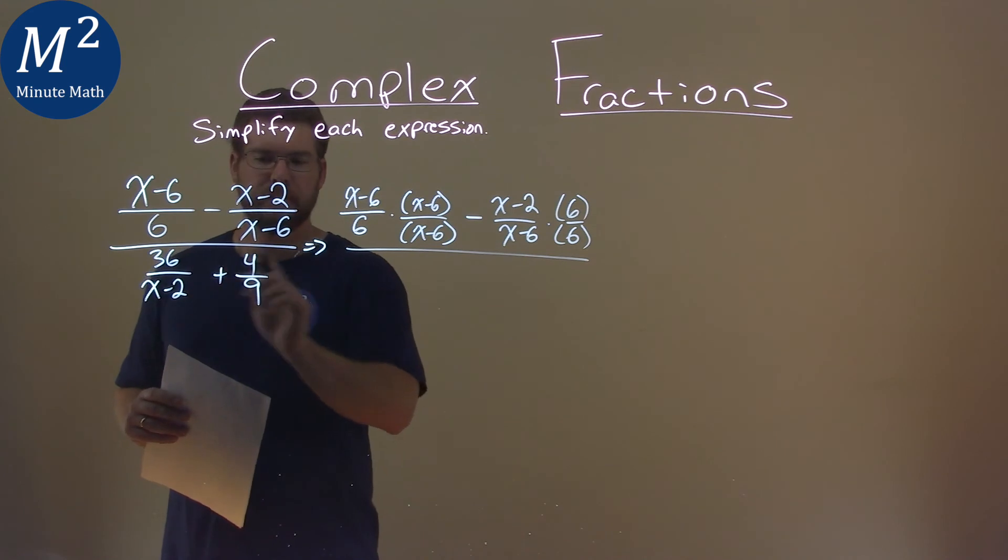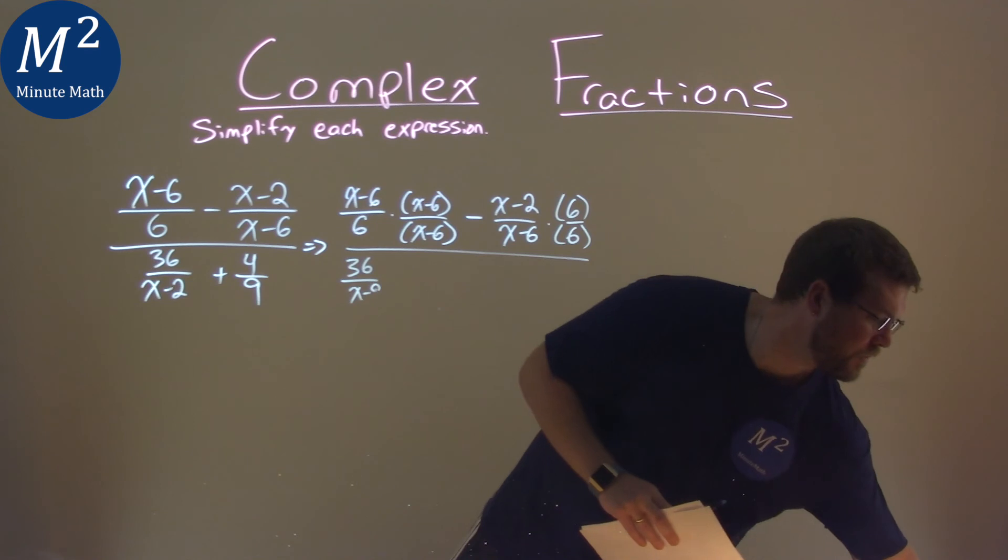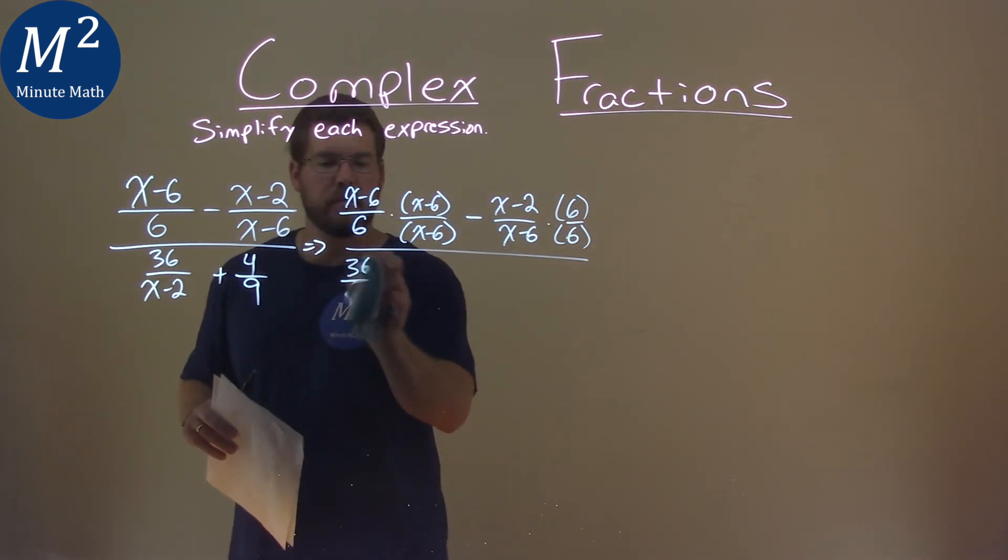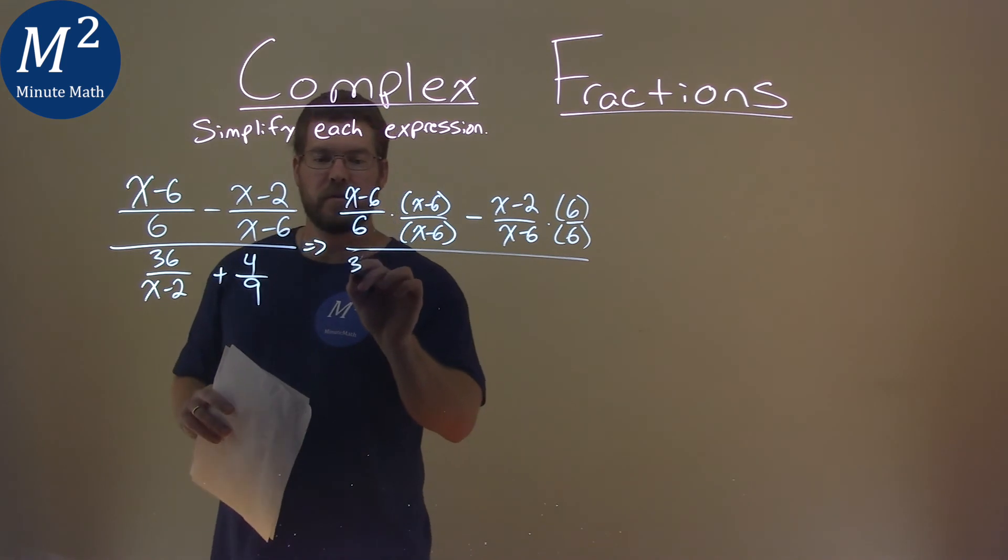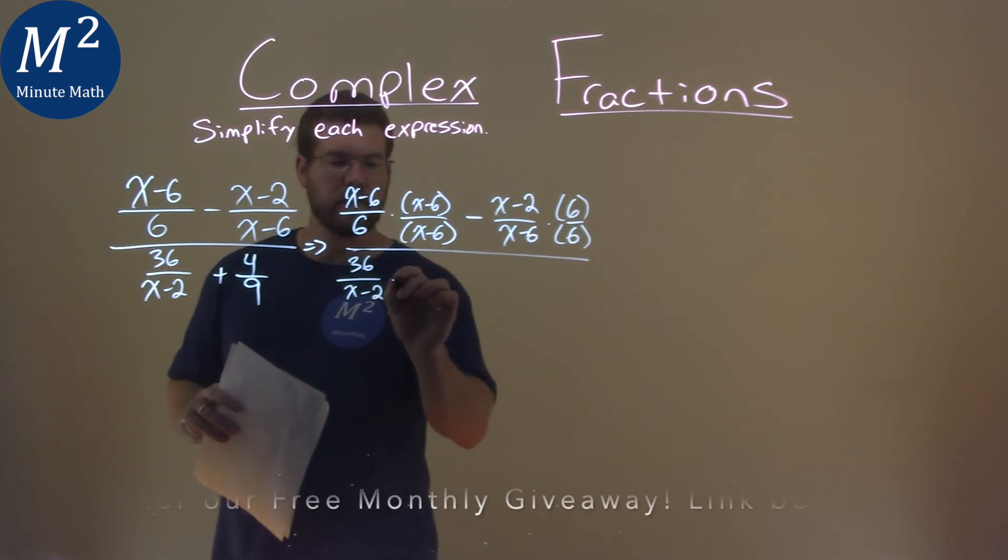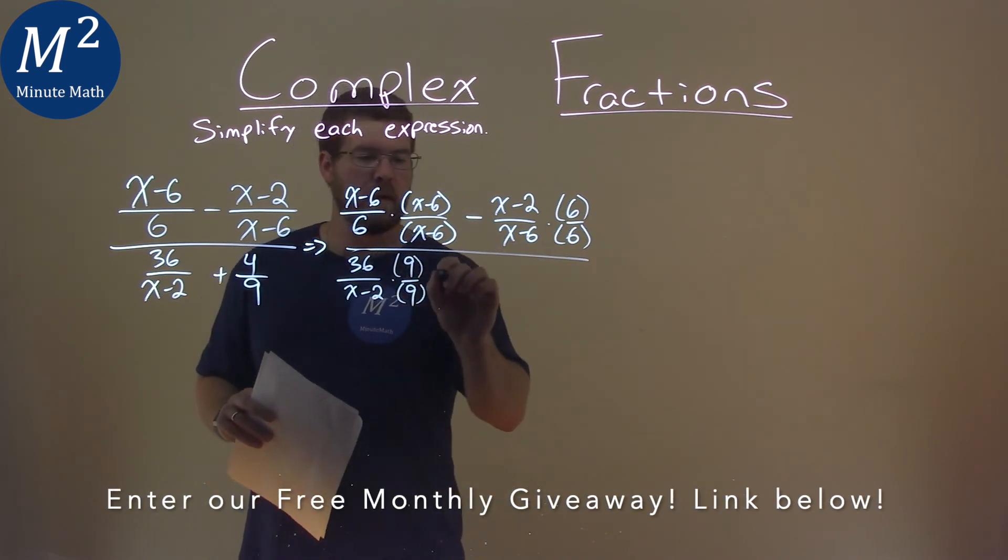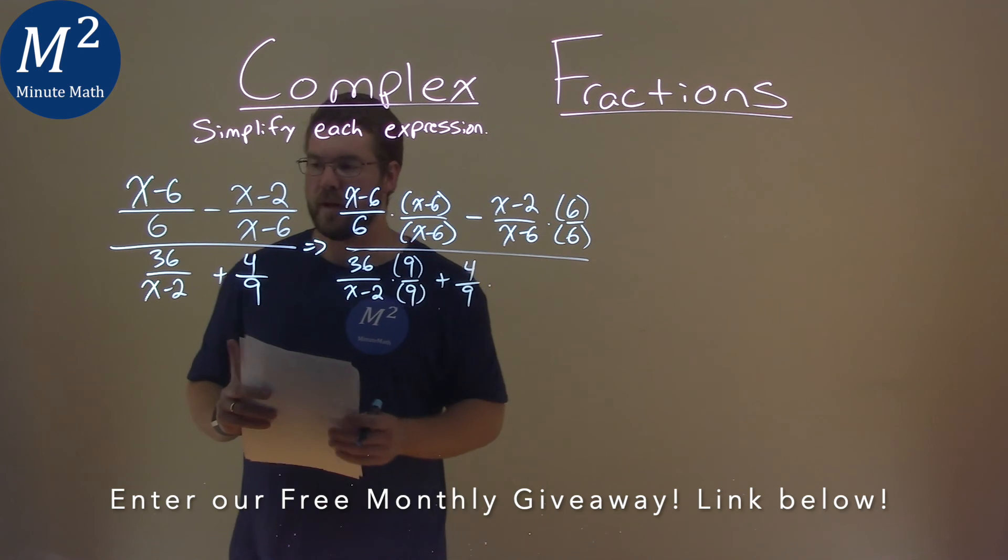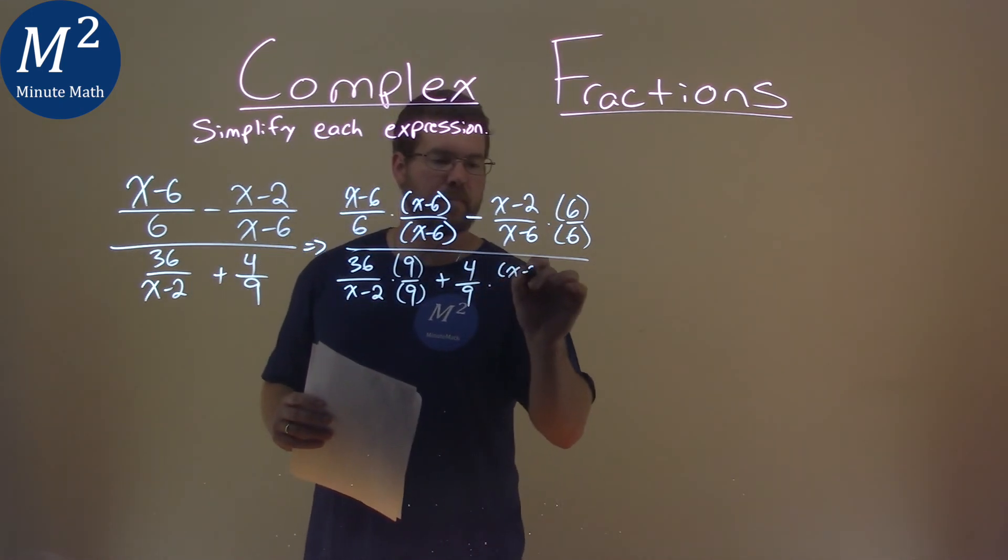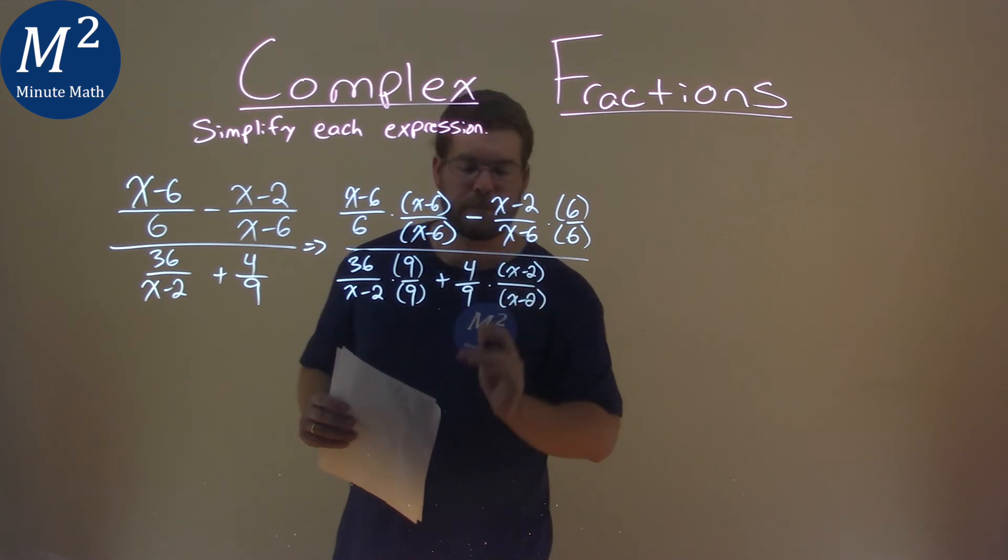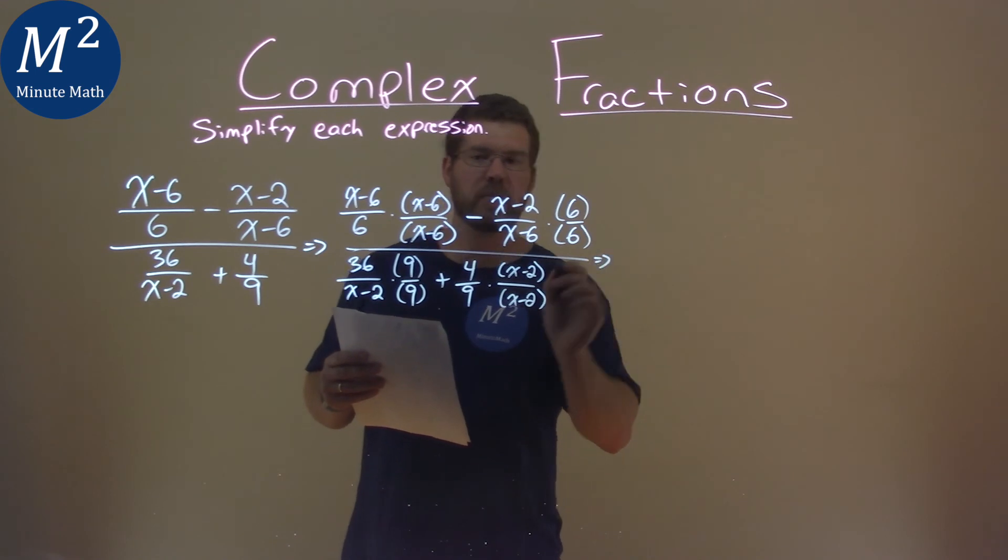Now, same idea down here. 36 over x minus 2. I'm getting ahead of myself. I'm going to write a 9, but I need to write a 2 there. So, we have a 36 over an x minus 2 times a 9 over a 9. Then, we take that 4 over 9 and multiply that by this x minus 2 over itself. Okay? So, much work. So, let's go simplify this.